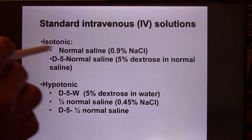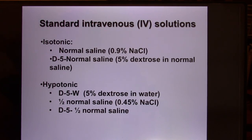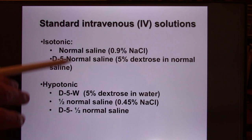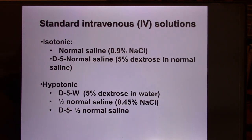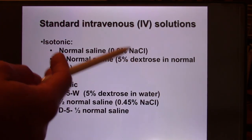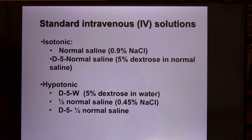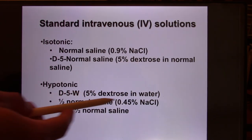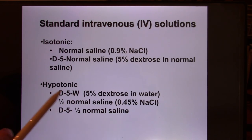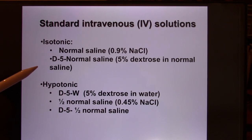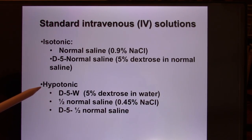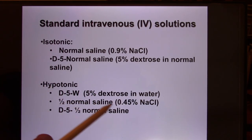Clinically, we use normal saline, which is an isotonic solution. Sometimes a combination is used, like D5 normal saline — that's 5% dextrose (essentially glucose, molecular weight 180 g/mol) mixed with normal saline. This is given when patients are weak and need sugar to produce ATP. You can also use hypotonic solutions like D5 water — 5% dextrose in water — because glucose is a penetrating particle that moves into cells.